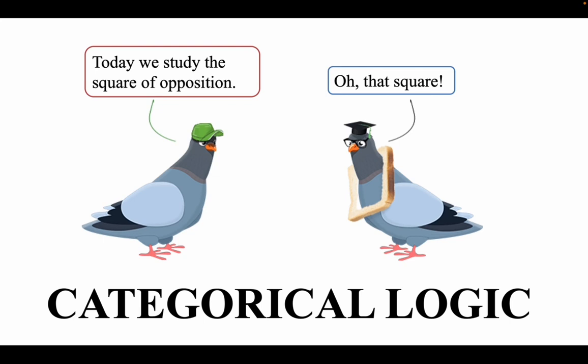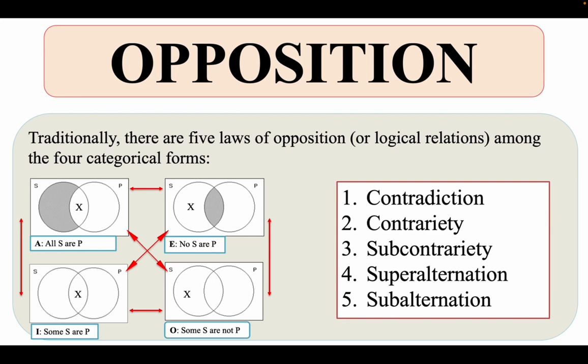What are these squares of opposition? Opposition, or the laws of opposition, refer to the traditional interpretation of categorical logic, according to Aristotle. According to categorical logic, there are four categorical forms: A, E, I, and O. According to the traditional interpretation, these four categorical forms exist in a certain relation with each other, and they obey these laws of opposition.